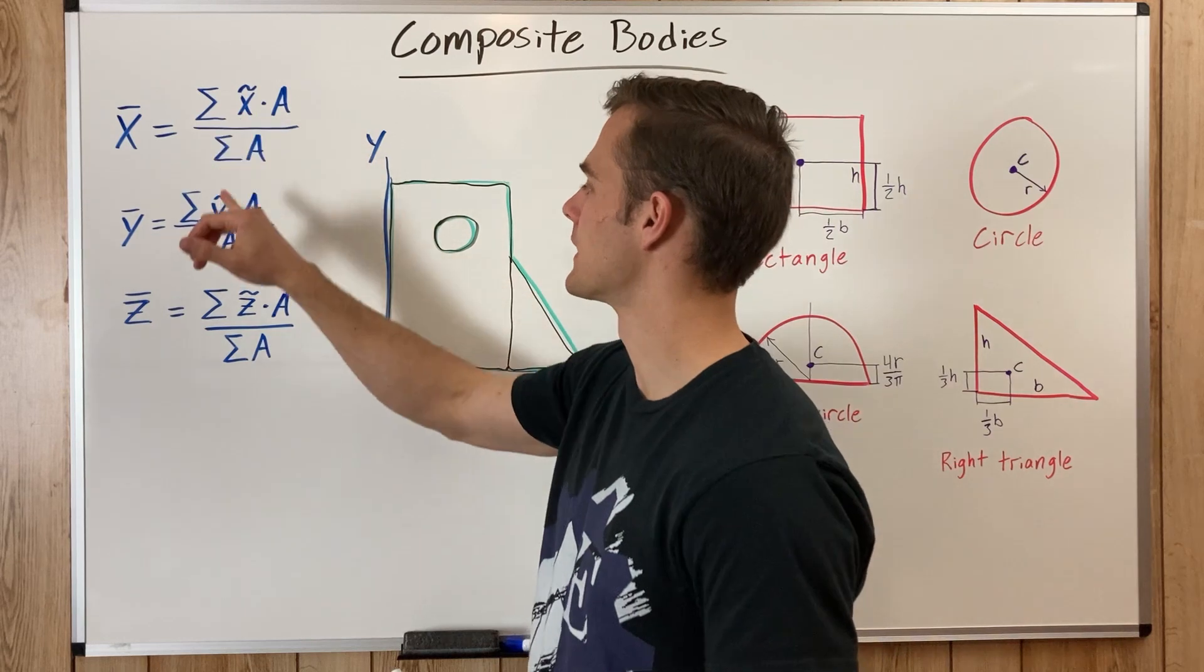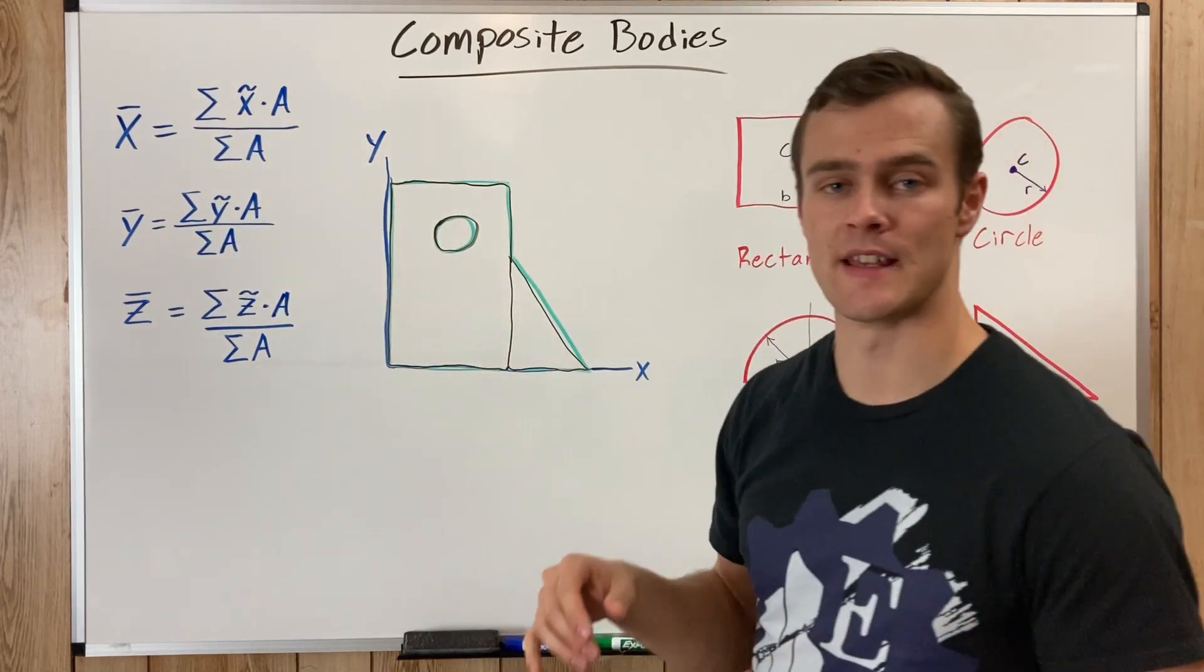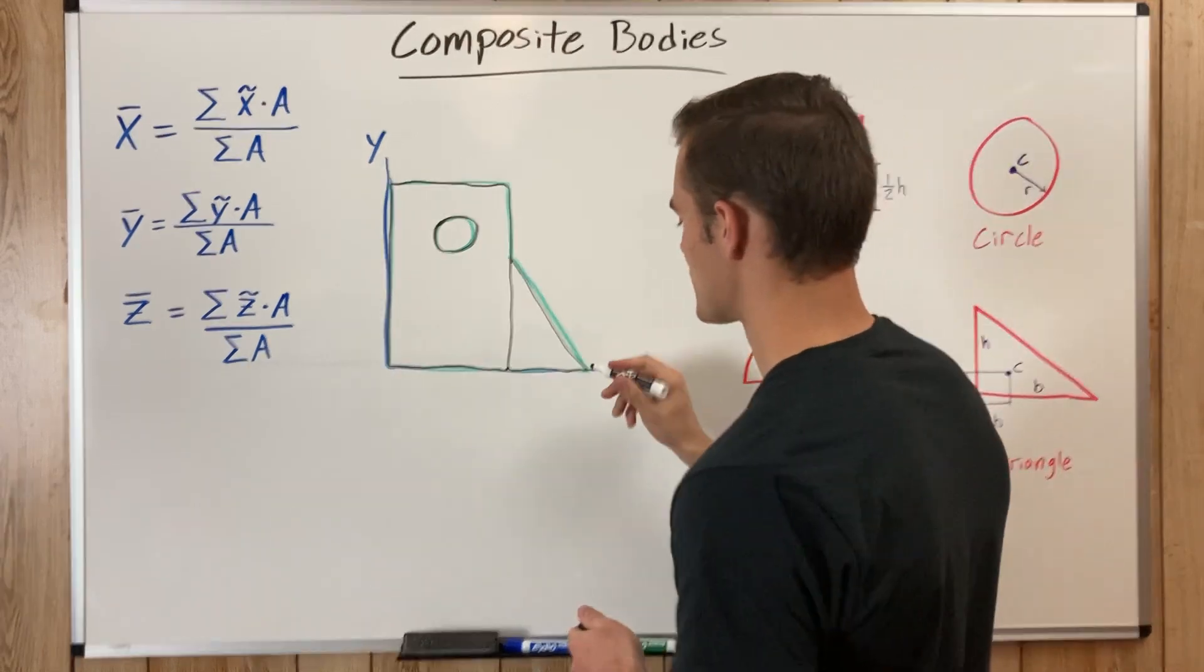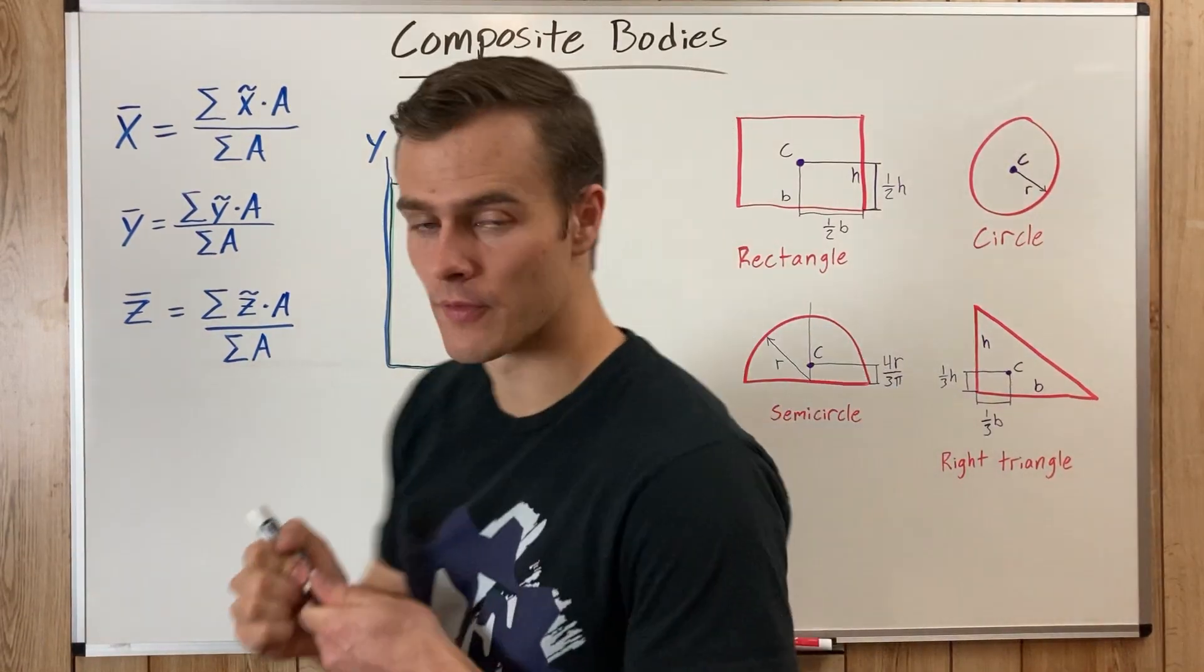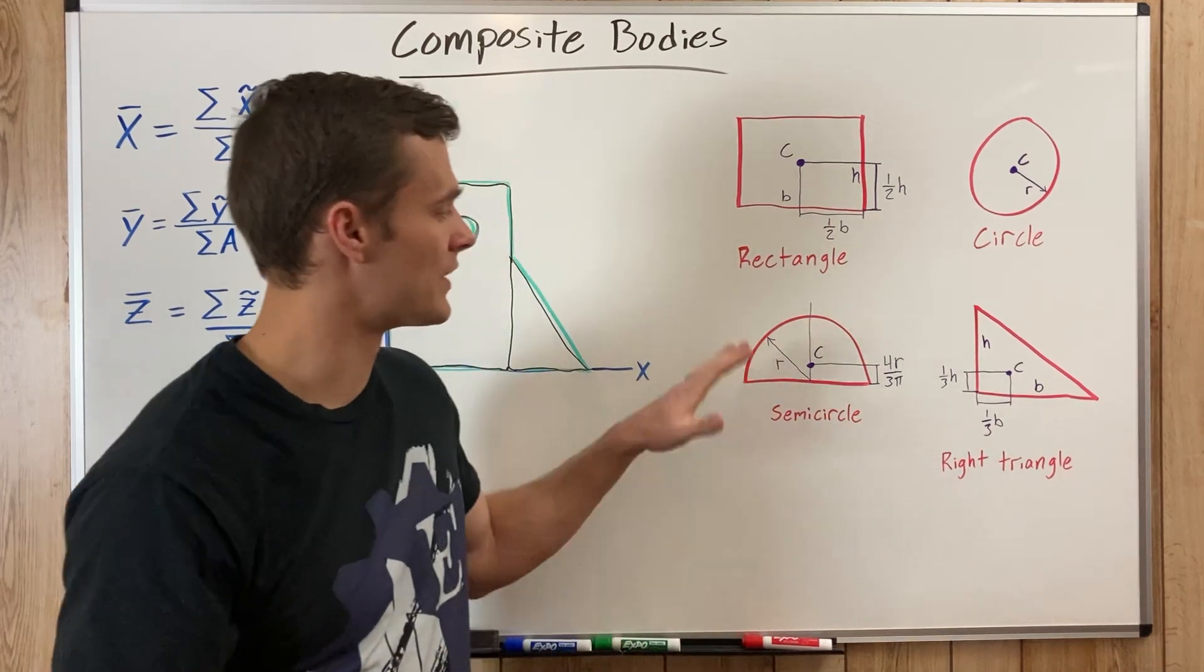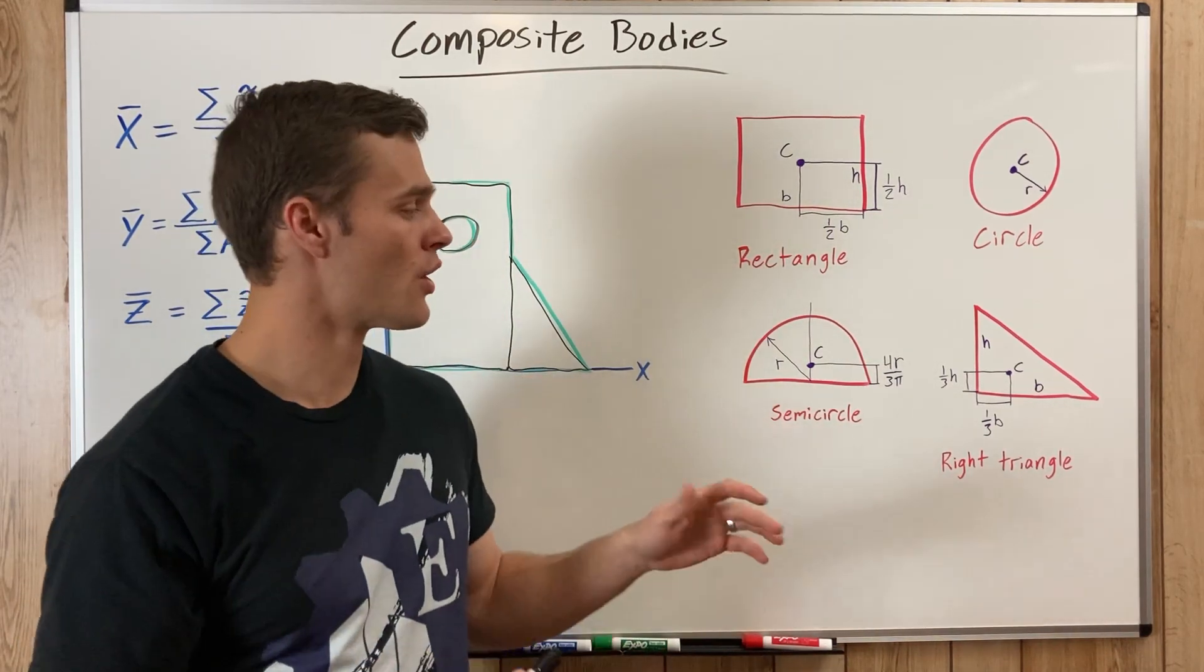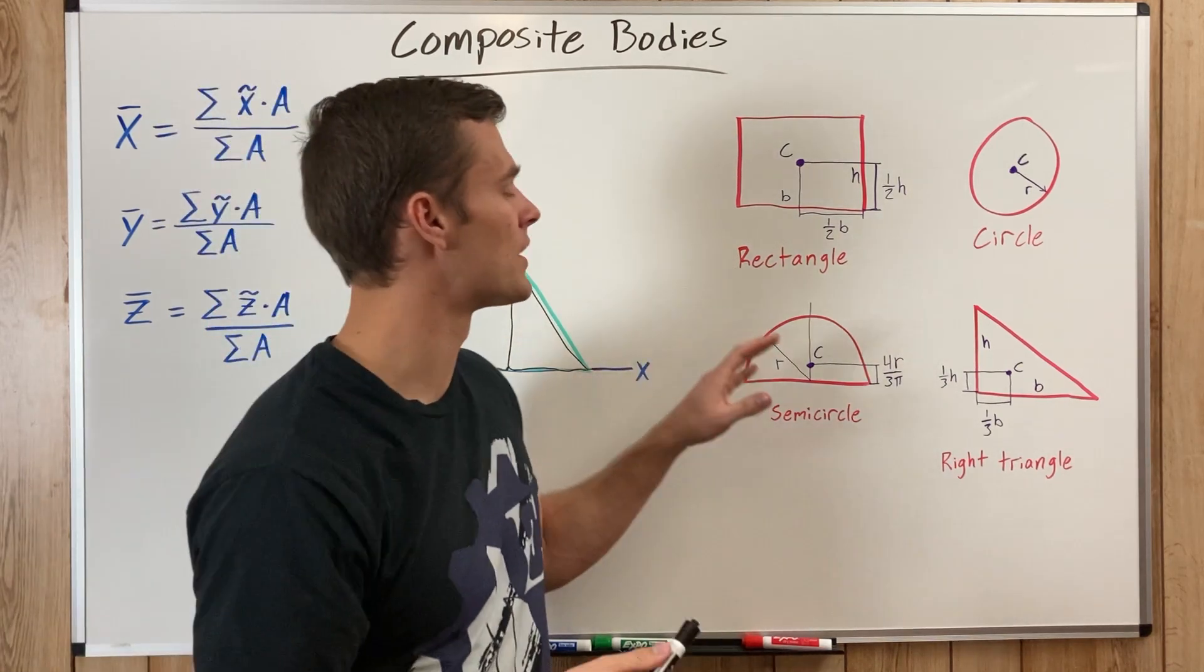And that's what x and y tilde are, is the x and y centers of mass, or the coordinates of each of these shapes. And the way you find it is, here's a few examples, but you can find these often in your book, in your textbook, or looking them up online. But here are a few simple ones.